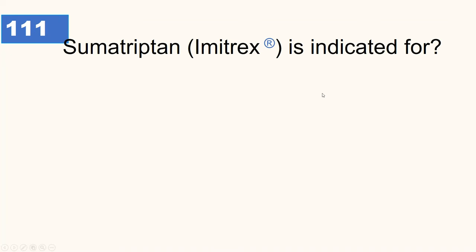Alesse is a hormonal contraceptive containing estrogen and progesterone. The type of estrogen in Alesse is ethinyl estradiol, and the progesterone type is levonorgestrel.